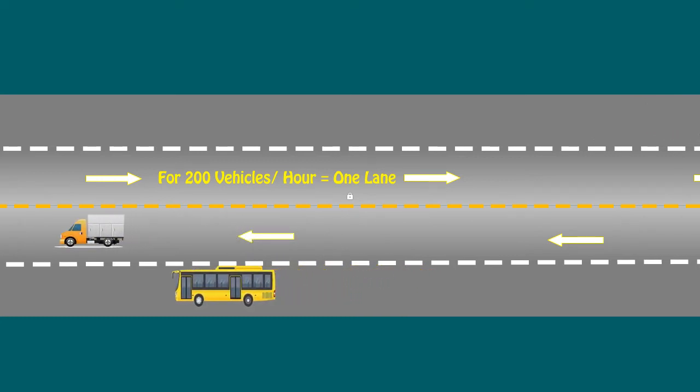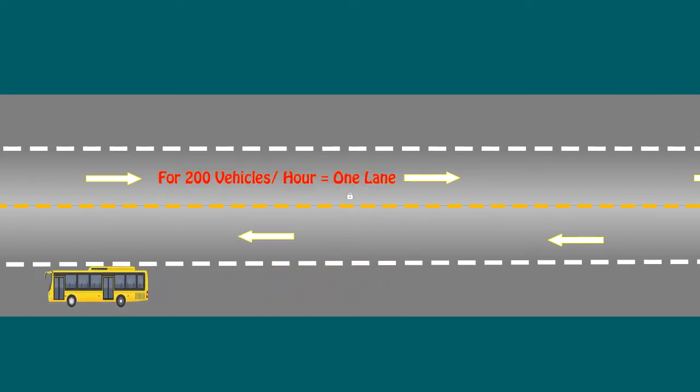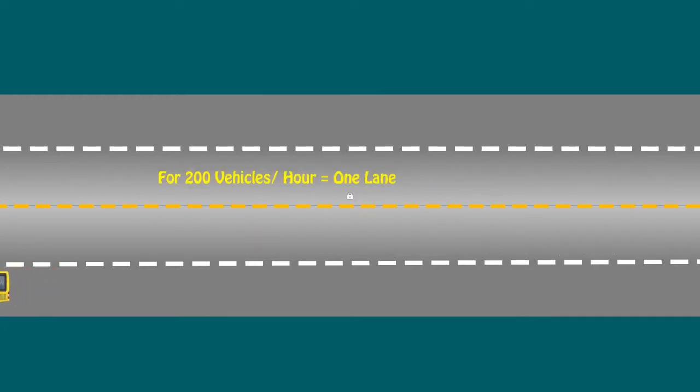If the number of vehicles passing in faster lane is more than 200 numbers per hour, then one more lane shall be considered for free flow of traffic. In general, for every 200 numbers of vehicles, one lane shall be considered.